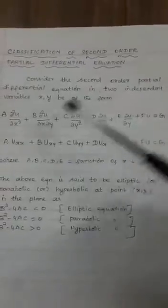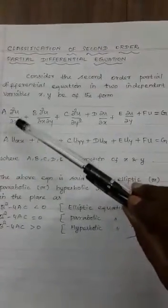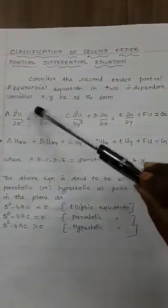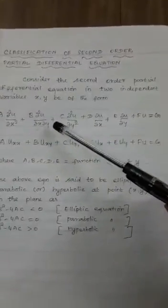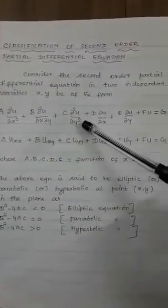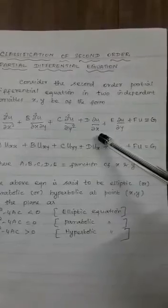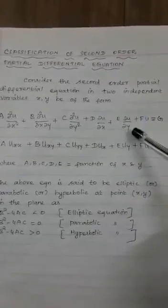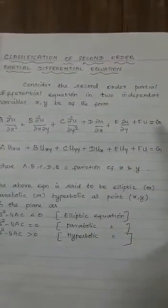The general form is A ∂²u/∂x² plus B ∂²u/∂x∂y plus C ∂²u/∂y² plus D ∂u/∂x plus E ∂u/∂y plus Fu equals g.